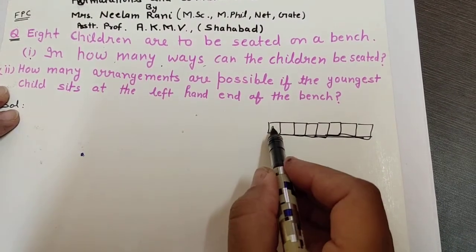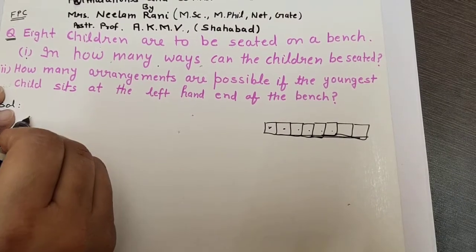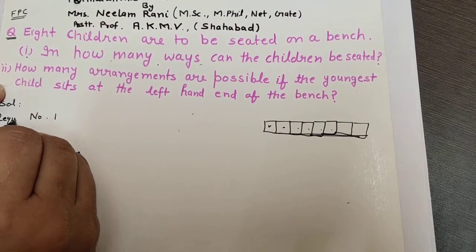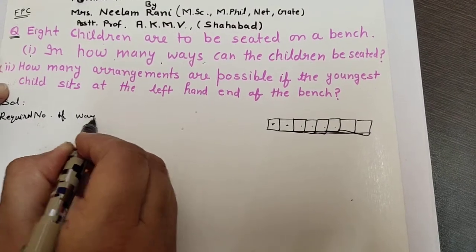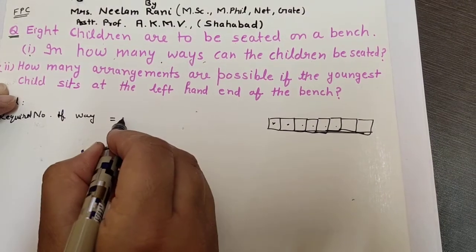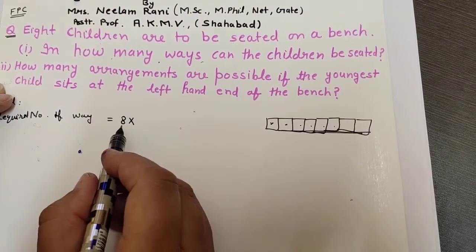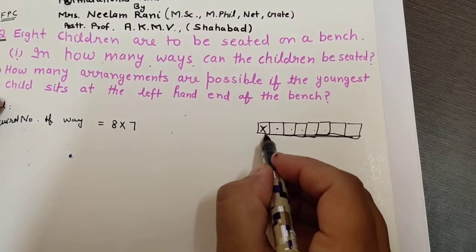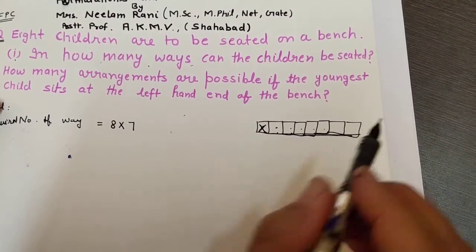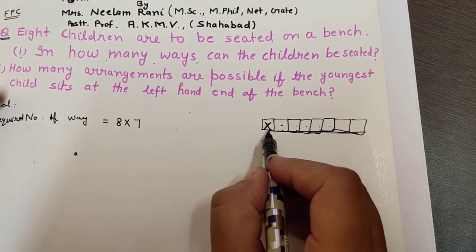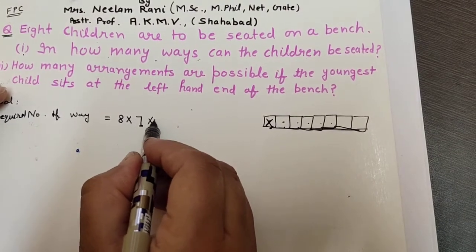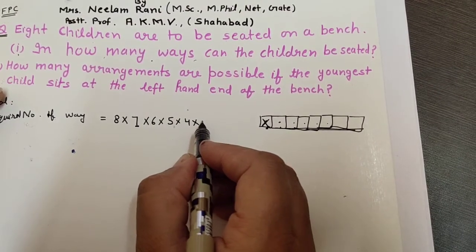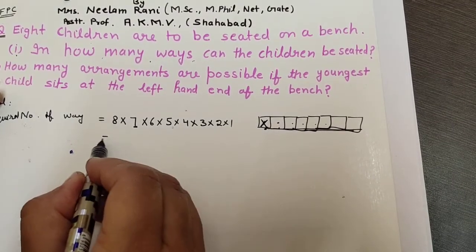The first student can sit in any of the eight positions, so the first student has eight ways. The second student can sit in seven remaining ways, then six, five, four, three, two, and one. So the required number of ways of seating eight students will be 8! (eight factorial).